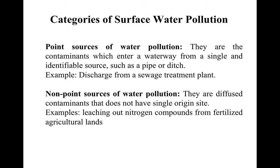Water pollutants can also be categorized on the basis of their sources — where they originated. Surface water is water which is present on the surface of the continent, like rivers, lakes, or wetlands. Sources of surface water pollution can generally be grouped into two categories on the basis of origin.